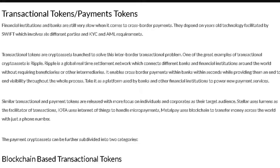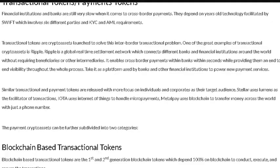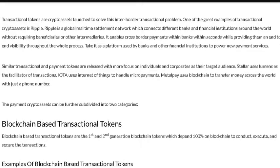The SWIFT transfer system involves six different parties and KYC — Know Your Client — and AML requirements. Transactional tokens are crypto assets launched to solve this inter-border transactional problem. A great example is Ripple — a global real-time settlement network which connects different banks and financial institutions around the world without requiring intermediaries, enabling cross-border payments within seconds.